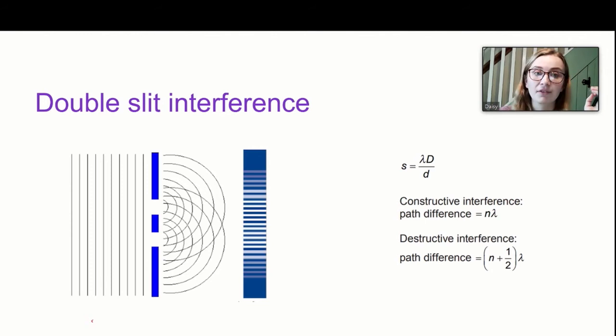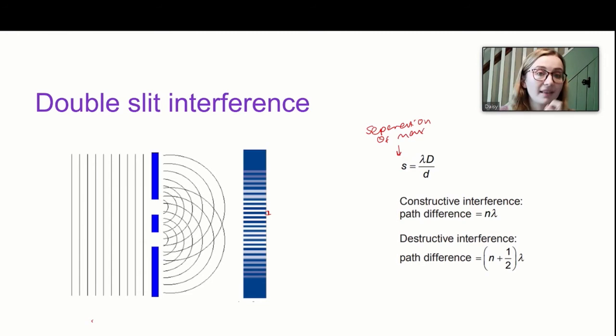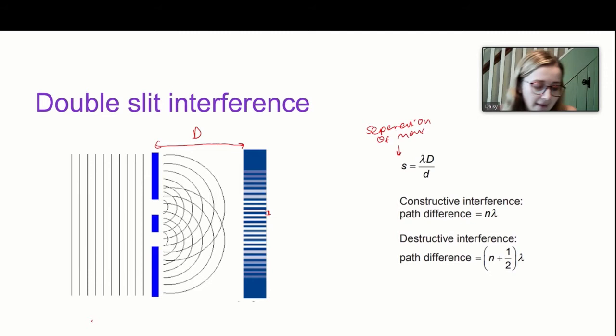To describe this situation we use the equation S = λD/d. In this equation, S is the separation of the maxima — the bright spots — measured with a ruler in whatever units you're using. Lambda (λ) is the wavelength, capital D is the distance between the slits and the screen, and small d is the separation of the two slits, normally measured from the centre of the two slits.